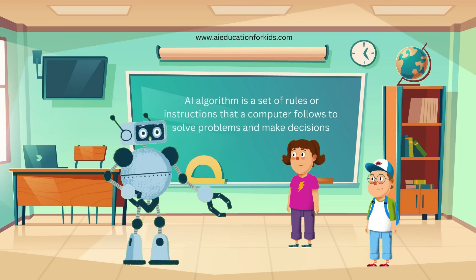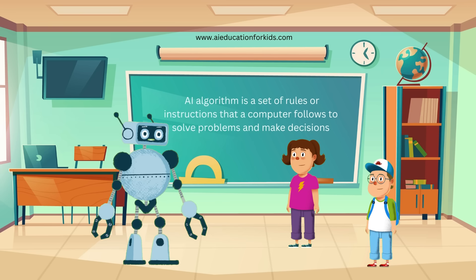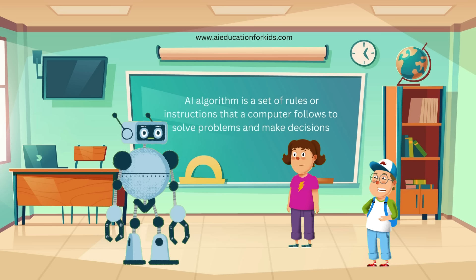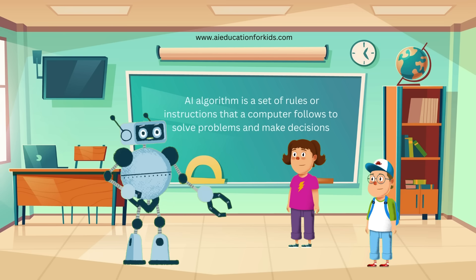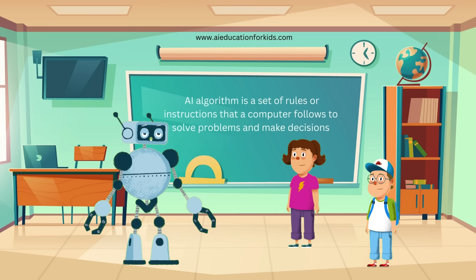Another example is solving a maze. An algorithm can be like a set of directions that tells you to go left, right, and straight until you reach the exit. So algorithms are like detailed instructions for computers? Exactly, Ethan. Algorithms break down complex problems into smaller, manageable steps that computers can follow to find solutions.